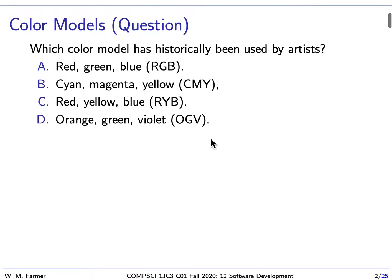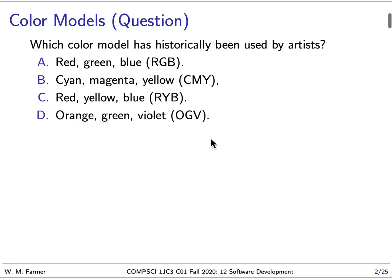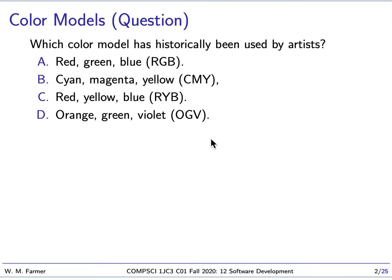But before we do that, I have a question for you. Which color model has historically been used by artists? I give you four choices: red, green, blue; cyan, magenta, yellow; red, yellow, blue; orange, green, violet. I'll give you a moment to come up with an answer.